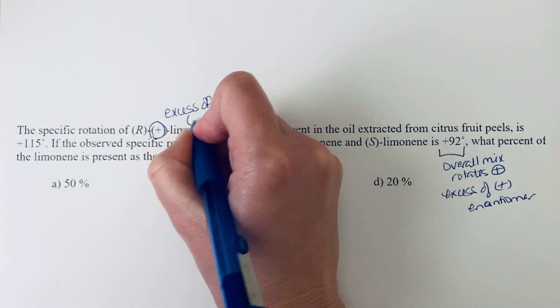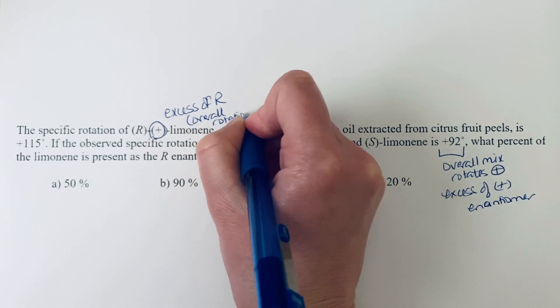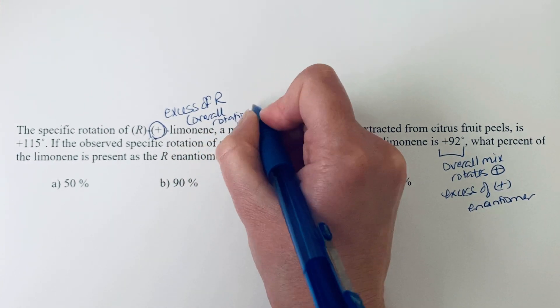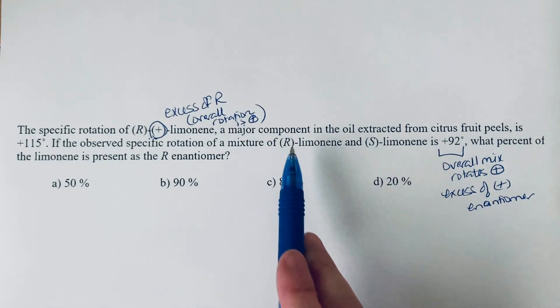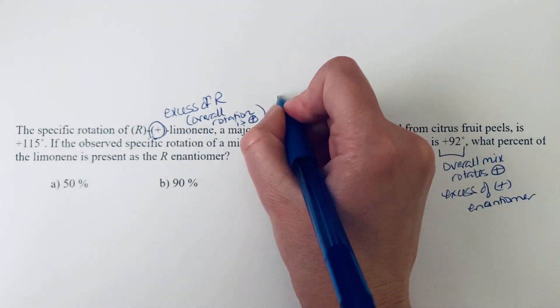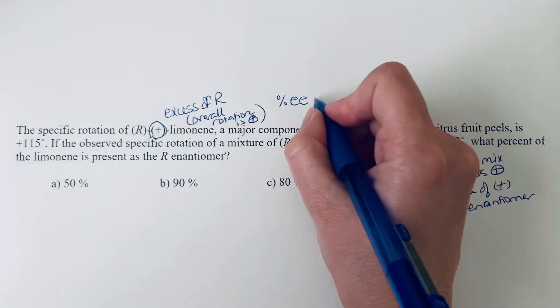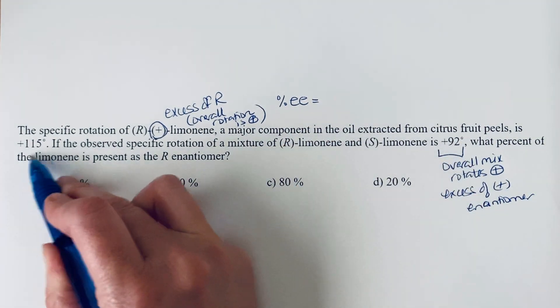And so we know that because the overall rotation is positive. But to find out the actual breakdown of S and R, we need the excess. So we need to know the percent enantiomeric excess or percent EE.